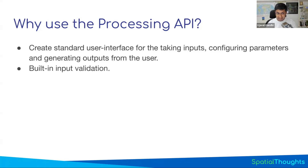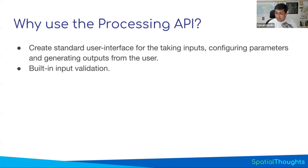User validation - when we're writing scripts, we have to do validation: please select a layer, please select a vector layer, our tool doesn't work with raster layers, you should have at least one feature selected. All of that validation is quite cumbersome to do. If you write a processing script, the processing API does a lot of that for you. You don't have to write even a single line of code for validation - it comes free when you use the processing API.